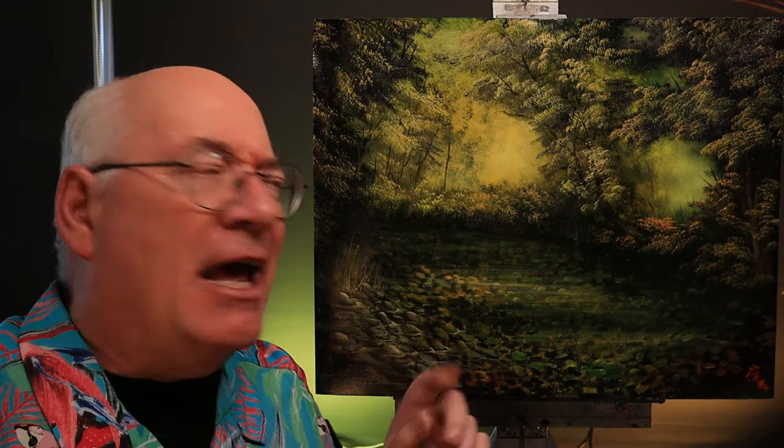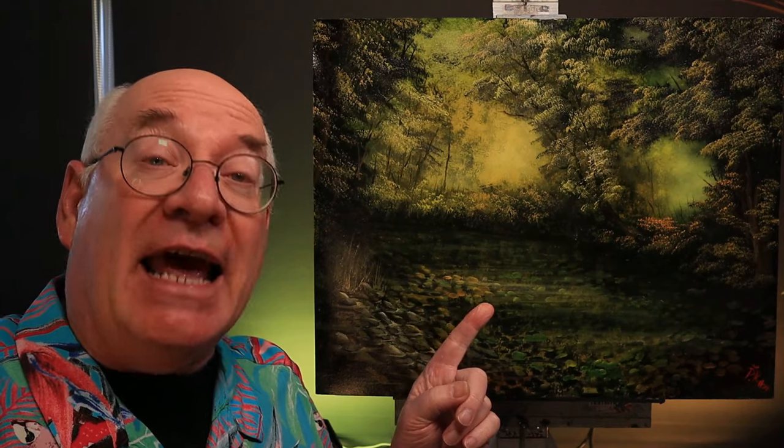So there you have it. Tranquil Wooded Stream, a Bob Ross classic with a little bit of extra from yours truly. Try this painting next. You can add colors to the underpainting for this one as well.